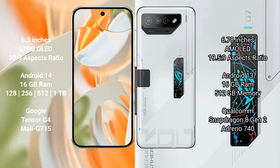The Google Pixel 9 Pro runs on the Android 14 operating system, while the ASUS ROG Phone 6D Ultimate runs on Android 13. The Google Pixel 9 Pro comes with 16 GB of RAM and storage options ranging from 128 GB to 512 GB or 1 TB internal storage.